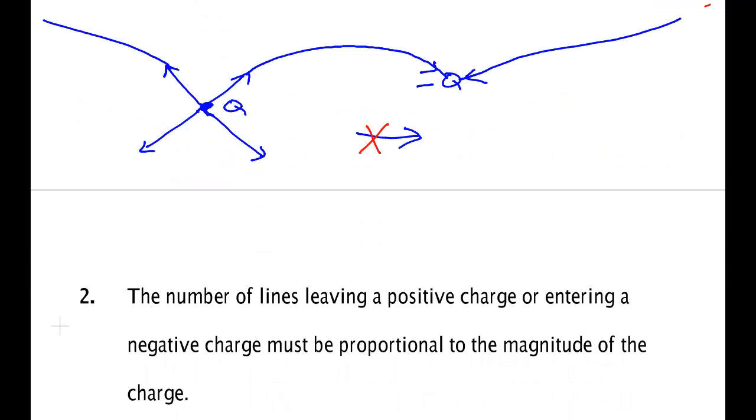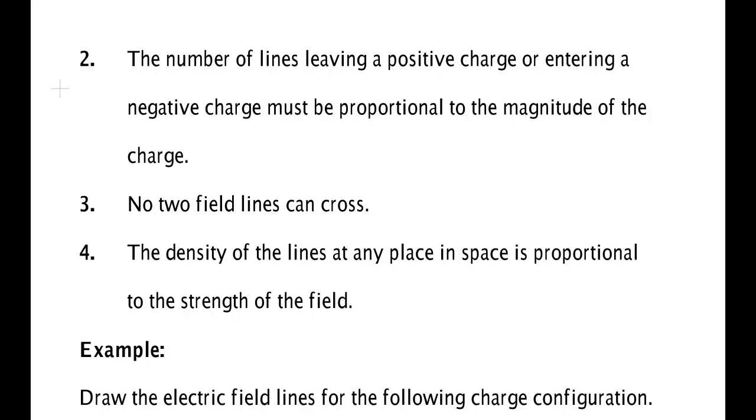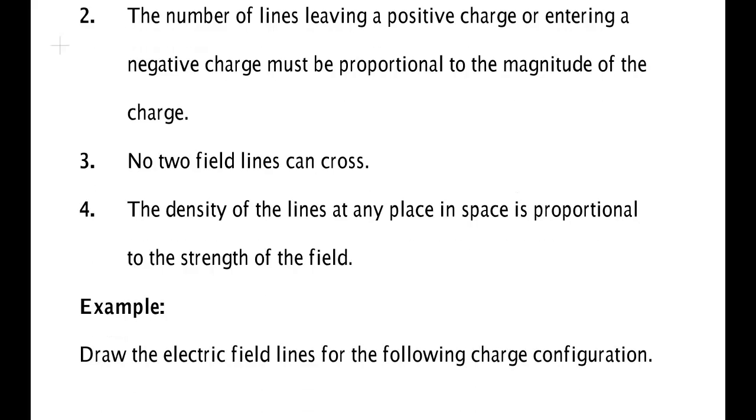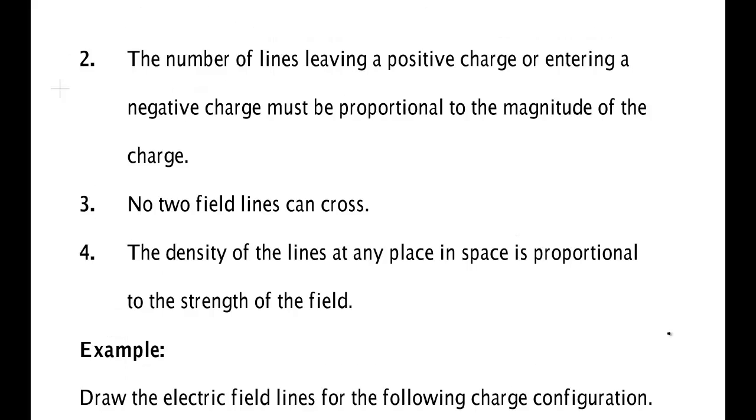Rule number two. The number of lines that leave a positive charge or enter a negative charge must be proportional to the magnitude of the charge. So a three coulomb charge should have three times as many lines either leaving or entering, depending on whether it's plus or minus, as a one coulomb charge has. If it doesn't do that, you don't have your drawing correct.